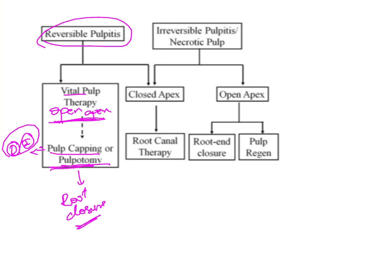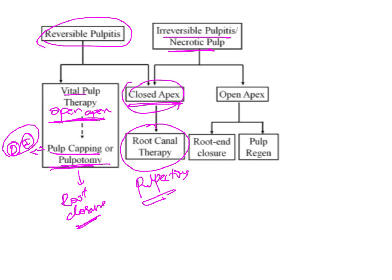But if the apex is already closed, we can proceed with normal root canal therapy or pulpectomy. Whereas in irreversible pulpitis with a necrotic pulp, if the apex is closed we will only go ahead with root canal therapy or pulpectomy. It is only when the apex is open that we need to consider alternative methods of treatment, because we want to achieve root enclosure.